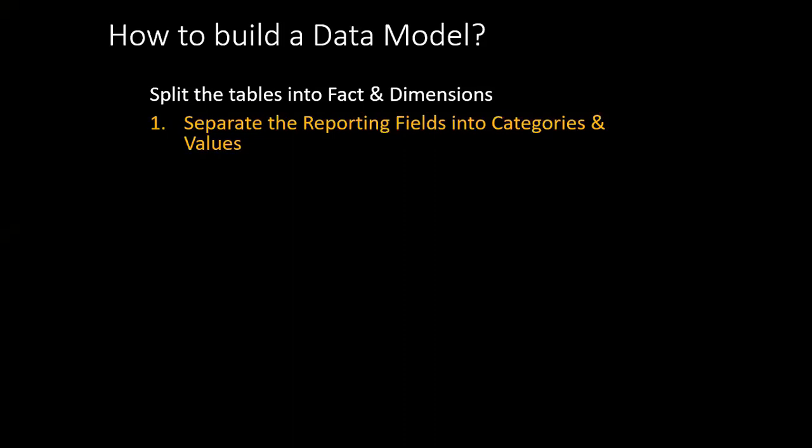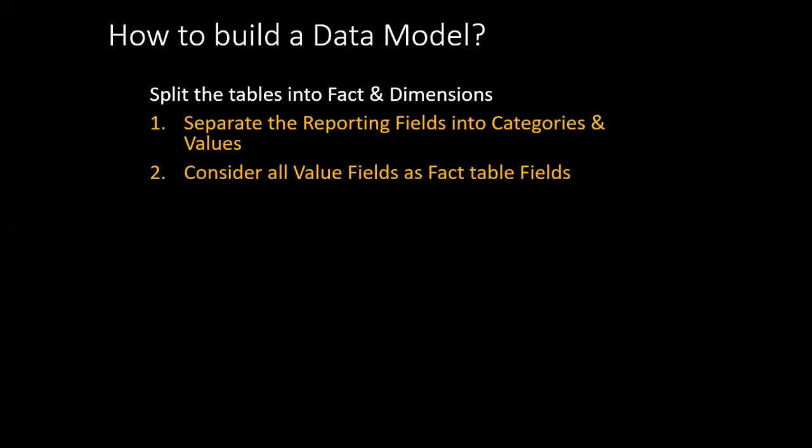When building a Power BI data model, you want to split your tables into two different kinds: fact tables and dimension tables. Step one is to separate your reporting fields into two different types of data — categorical data and quantitative data, which are categories and values. Step two is to consider all your value fields as fact table fields. After separating into categories and values, all quantitative fields go into the fact table.